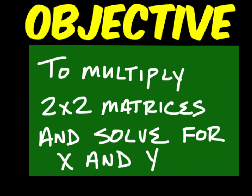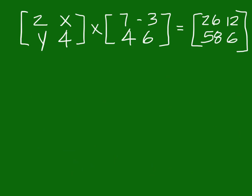So multiply 2 by 2 matrices and solve for X and Y. Here's example one. There's a pair of matrices multiplied together and the answer is at the end of it. But what you have to find are X and Y that are within that first matrix. So look at where X is at — it's in the first row. What you want to do is line up that first row with a column from the second matrix and then an answer from the answer matrix.